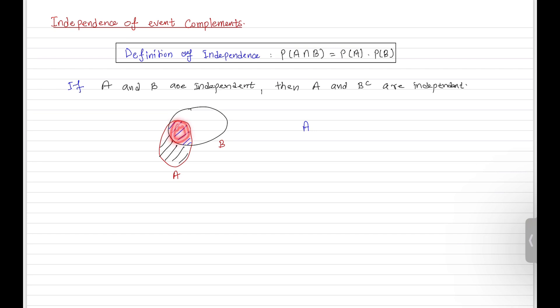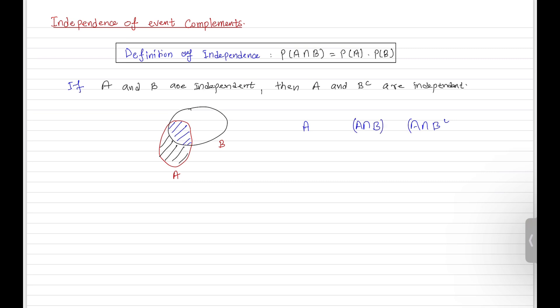Look at the blue part — that blue part is A intersection B, because it belongs to both A and B. Now look at the black part — that is the part outside B, meaning it is B complement, and it also belongs to A. So that becomes A intersection B complement. The union of these two parts gives you the complete set A. These two events are disjoint, because there is no intersection between the blue part and the black part.